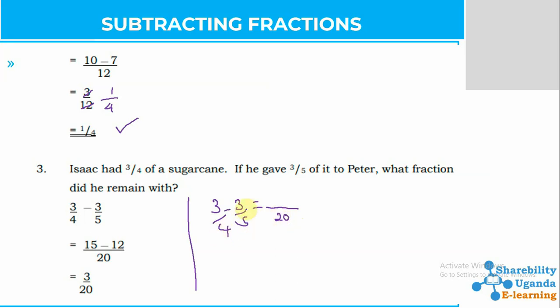We shall just get our common multiple, which can divide 5 and 4. So let's use 20. So when you divide 20 by 4, we get 5. 5 times 3, we get 15. When you divide 20 by 5, we get 4. 4 times 3, we get 12. So this simply means we shall now be able to come up with our answer here. We shall have our 3 out of 20. So we can look for a factor which can divide 3 and 20. Is it there? The answer is no. So we can leave it in this step. So that's how we shall be dealing with the subtraction of these fractions.